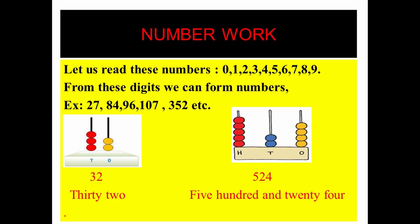I have written some examples of two digit and three digit numbers: 27, 84, 96 are two digit numbers, and 107, 352 are three digit numbers. When we take one digit numbers and join them, we can form two digit and three digit numbers.